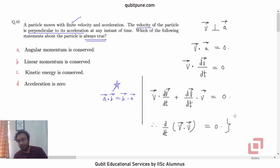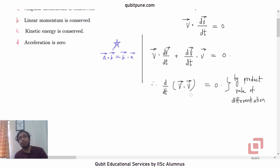So this is product rule, by product rule of differentiation or UV rule if you want to call it. But what is the dot product of any vector with itself? It is nothing but the square of its magnitude. So d by dt of V squared is zero. Therefore, V squared must be a constant.